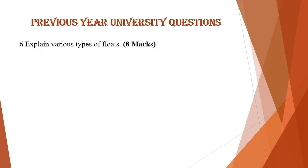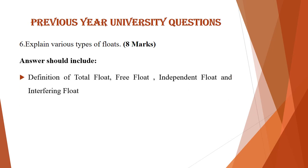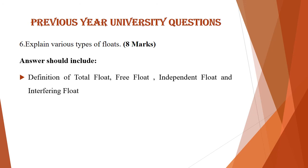The sixth question was: explain various types of floats, which carries 8 marks. There are four different types of floats: total float, free float, independent float, and interfering float. Your answer should include the definition and a brief explanation of each of these four types of floats.